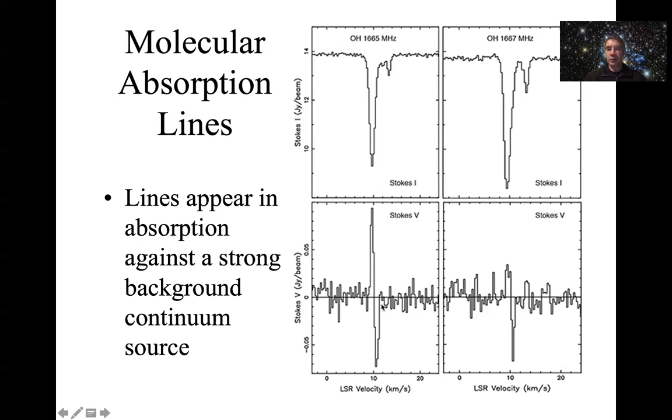That's another way of using spectral lines in absorption. If you look at the polarization, circular polarization with the Stokes V parameter, again you see this telltale switch, and it's telling us the magnetic field strength in the molecular cloud.